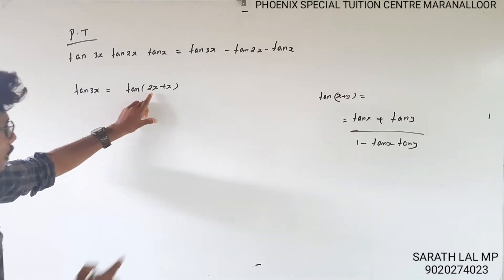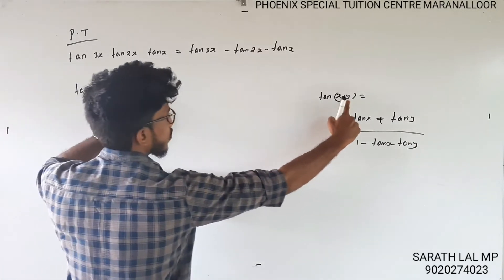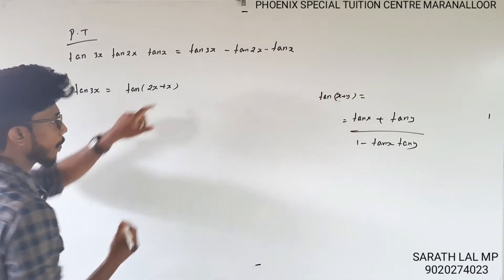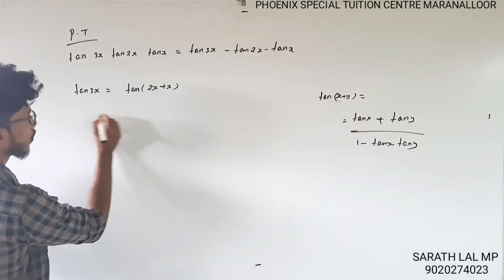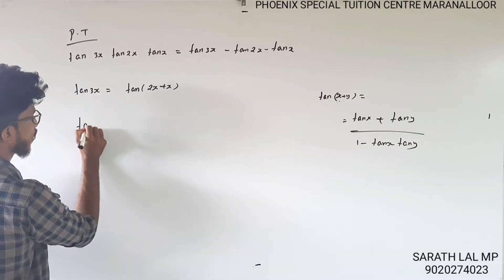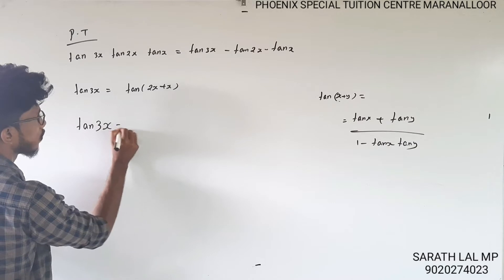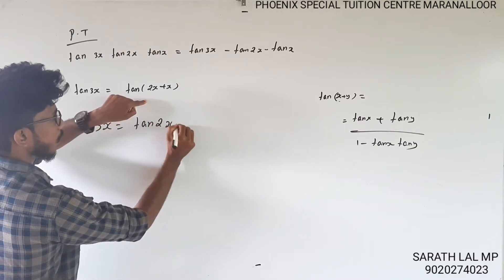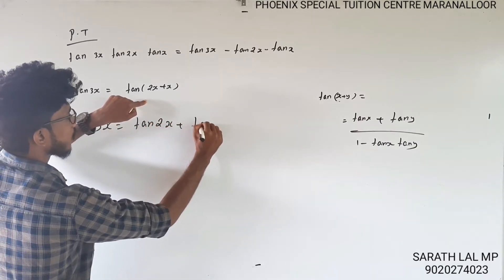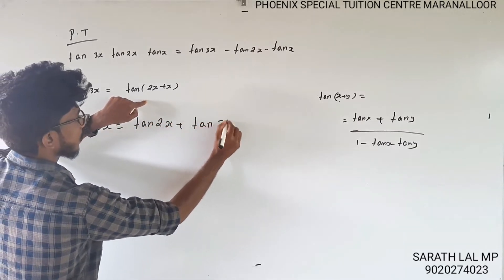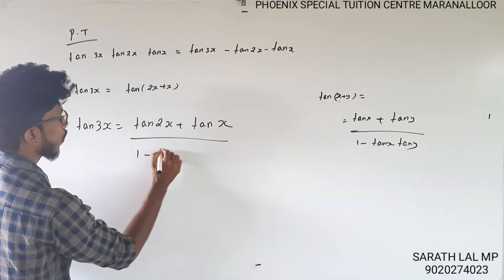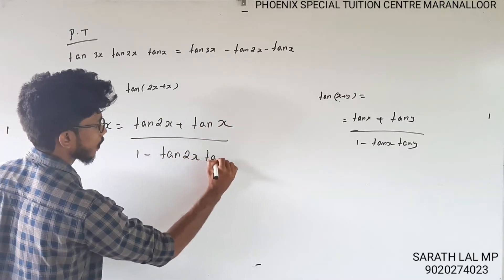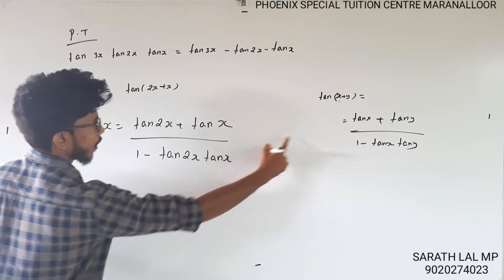Now, applying the formula: tan3x = (tan2x + tanx) / (1 - tan2x · tanx).